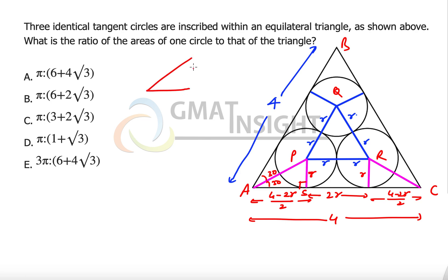Now we have a right angle triangle which has two angles 30 and 60 degrees, third angle 90 degrees, and here we have the two sides as well. This is r, this is 4 minus 2r divided by 2.